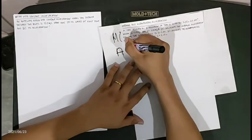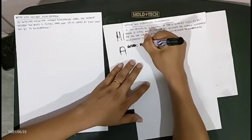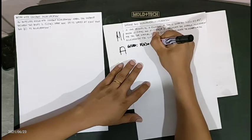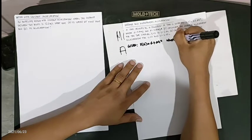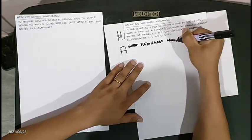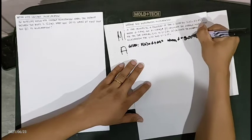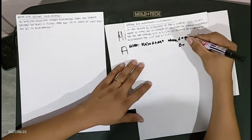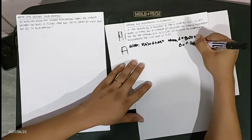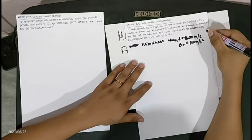First, we identify the given. The velocity function is v(t) equals alpha plus beta times t squared, where alpha equals 3.00 meters per second and beta equals 0.100 meters per second cubed.